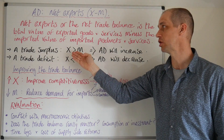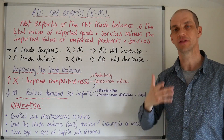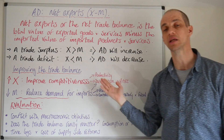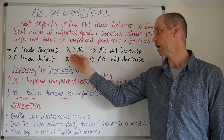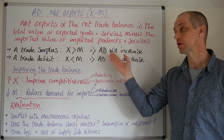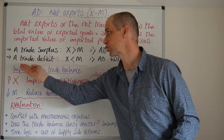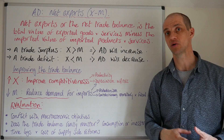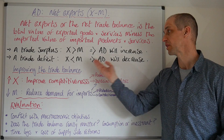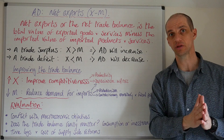If a country runs a trade surplus — like Germany and China, the most prominent examples in international economics — the value of exports will be greater than the value of imported products, and therefore aggregate demand will increase and income within the circular flow will rise. A trade deficit, however, as the UK economy runs, is where the value of exports is less than the value of imports, and aggregate demand will therefore contract, decrease, or shift to the left.